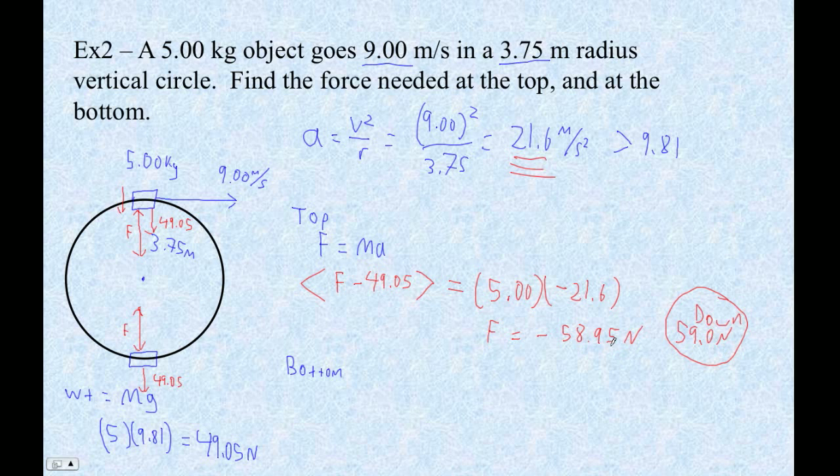You could have just as easily said 58.9. There's no hard, solid rule that we always have to round 0.5 up. Anyway, and then at the bottom, we're going to use F equals MA.